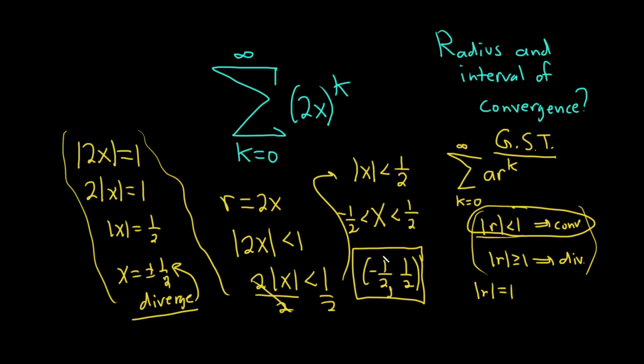Typically, people use the ratio test because the geometric series test only works when the series is geometric, and so typically people do check the endpoints. So here we took a very powerful shortcut.